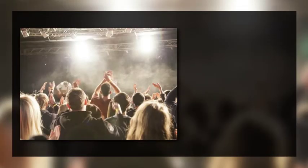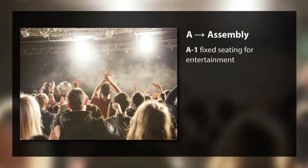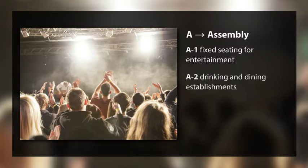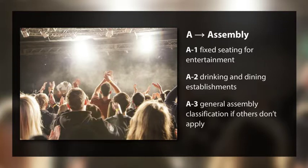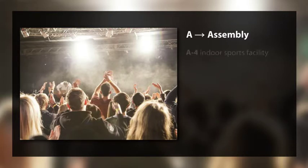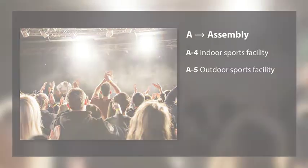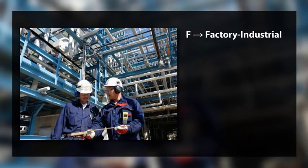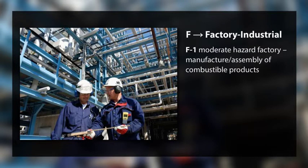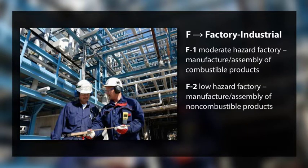The occupancy subgroups for specific classifications are as follows. Assembly subgroups: A-1 — fixed seating for entertainment, such as a theater or concert hall; A-2 — drinking and dining establishments; A-3 — general assembly classification if others don't apply; A-4 — indoor sports facility; A-5 — outdoor sports facility. Factory Industrial subgroups: F-1 — moderate hazard factory, manufacture or assembly of combustible products; F-2 — low hazard factory, manufacture or assembly of non-combustible products.